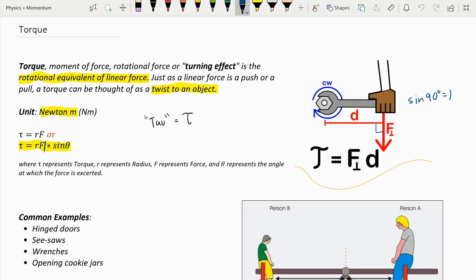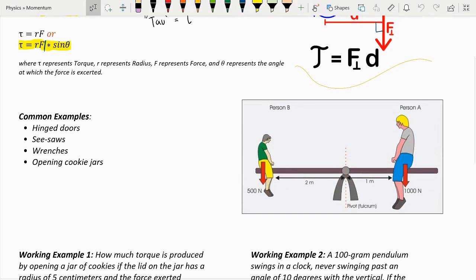Alright, now let's go over some common examples. Common examples of torque are hinged doors, seesaws, wrenches, and opening cookie jars.